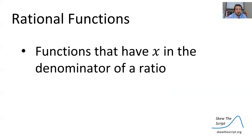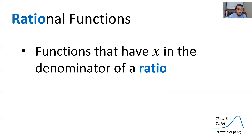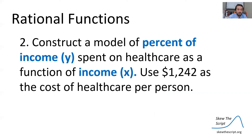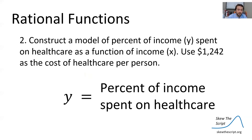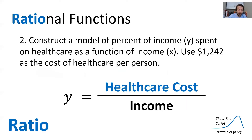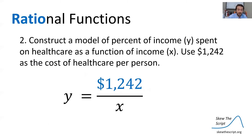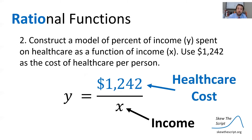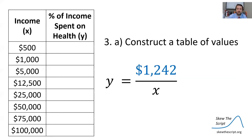Now we'll turn to rational functions. Rational functions are functions that have x in the denominator of a ratio — you can kind of see 'ratio' in 'rational,' that's why it's named that way. To actually do this, we'll construct a model of percent of income (y) spent on healthcare as a function of income (x). We'll continue to use $1,242 as the cost of healthcare per person. So y is the percent of income spent on healthcare, meaning y is the ratio of healthcare cost to income: y = 1242/x.